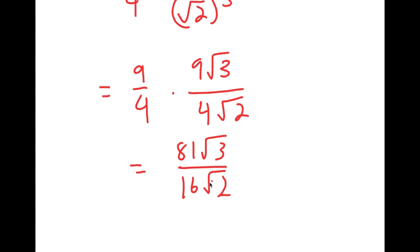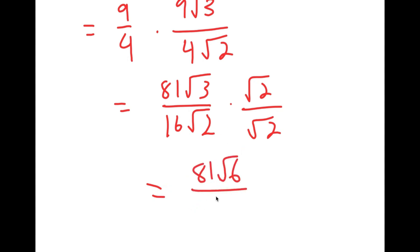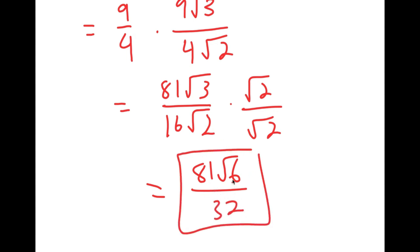We don't want any radicals in our denominator, so I'm going to multiply this by the square root of 2 over the square root of 2. So I get 81 root 6 over 16 times 2, which is 32. So this is my answer.